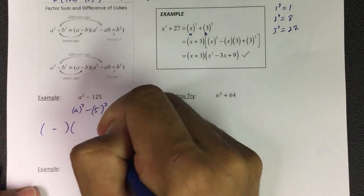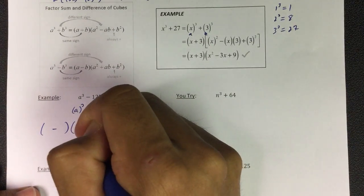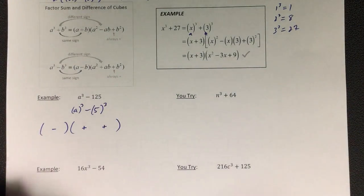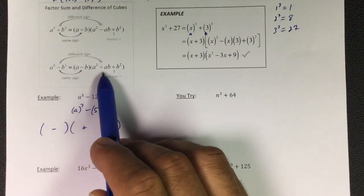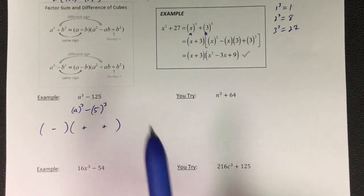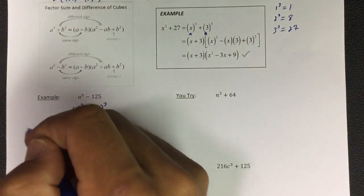This one's always plus, and this one is opposite of that one. If you get those right, you're good. See, I got a minus, so then it's minus plus plus, minus plus plus.